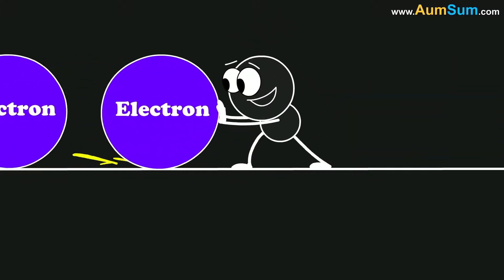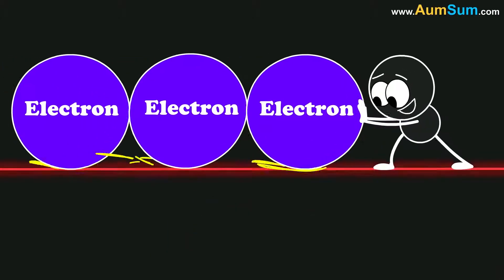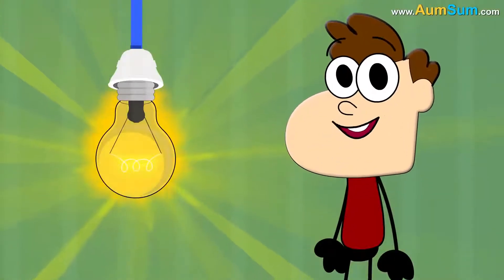Now, this hindrance to the flow of electrons leads to the creation of friction which causes the filament to heat up and start glowing. So, this is how a lightbulb glows.